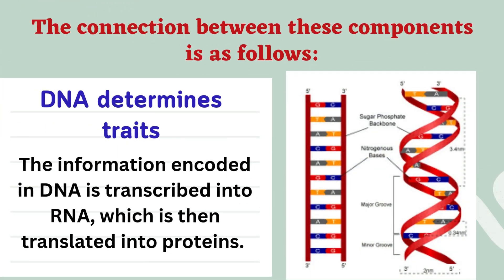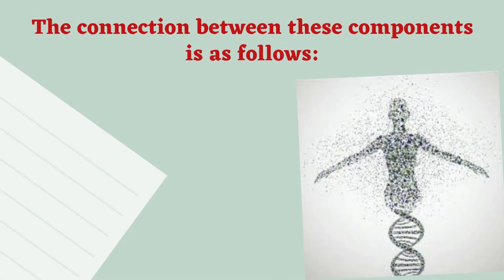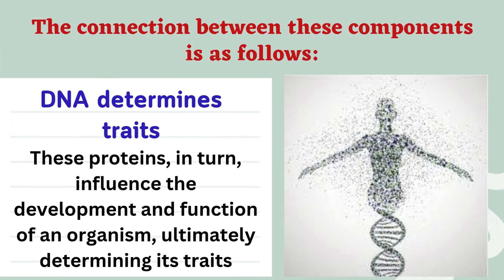DNA determines traits. The information encoded in DNA is transcribed into RNA, which is then translated into proteins. These proteins, in turn, influence the development and function of an organism, ultimately determining its traits.